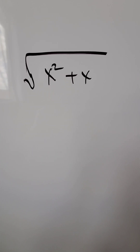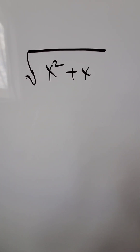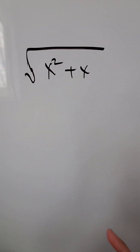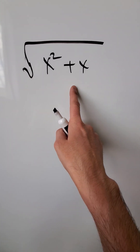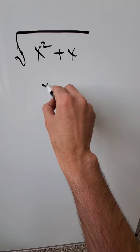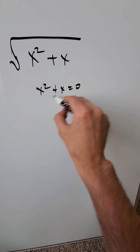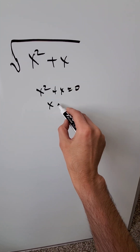We have a function here: root of x squared plus x. What is the domain of this function? That is, what are the acceptable values of this function? Look at the inner part, x squared plus x, and equal it to 0 to find your roots.